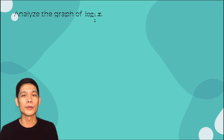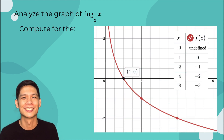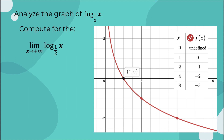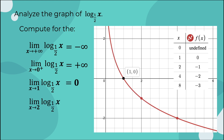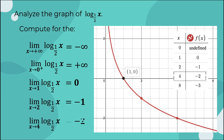Analyzing the graph of log base 1/2 of x, let us compute for the following limits. The limit as x approaches positive infinity is equal to negative infinity. The limit as x approaches 0 from the right is equal to positive infinity. The limit as x approaches 1 is equal to 0. The limit as x approaches 2 is equal to negative 1. And the limit as x approaches 4 is equal to negative 2.